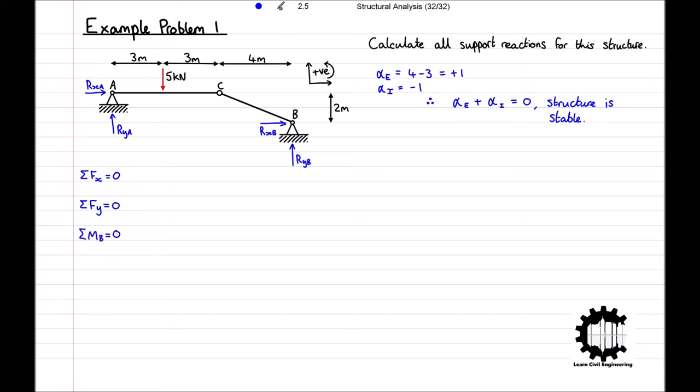Applying our conditions for equilibrium, and taking the x-coordinate direction to be positive, the sum of all horizontal forces is equal to rxa plus rxb plus 4 times 8 equals 0. Taking the y-coordinate direction to be positive, the sum of all vertical forces is equal to rya minus ryb minus 10 equals 0. Taking anticlockwise rotation to be positive, the sum of all moments relative to point A is equal to minus 10 times 4 minus ryb times 16 minus rxb times 8 minus 4 times 8 times 8 over 2 equals 0. And finally, the sum of all moments applied to the structure on the left side of the hinge is equal to minus rya times 4 equals 0.